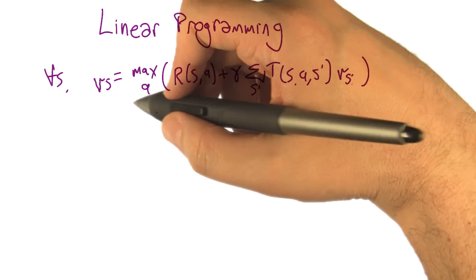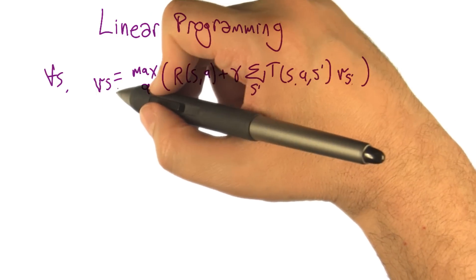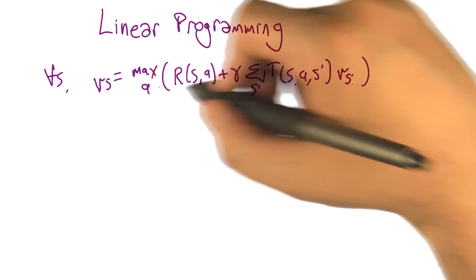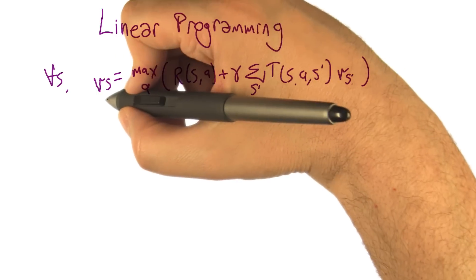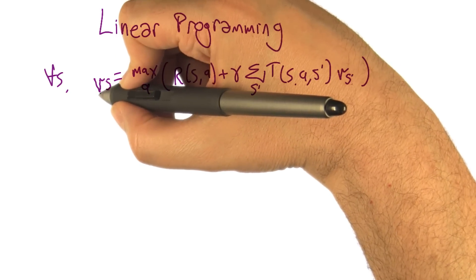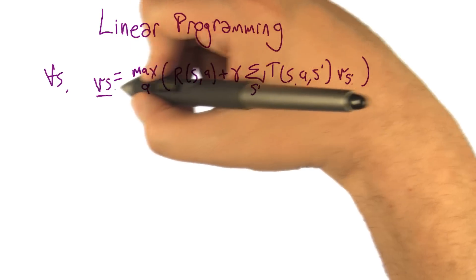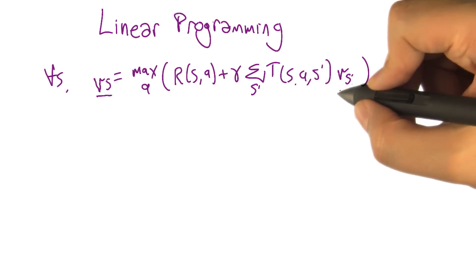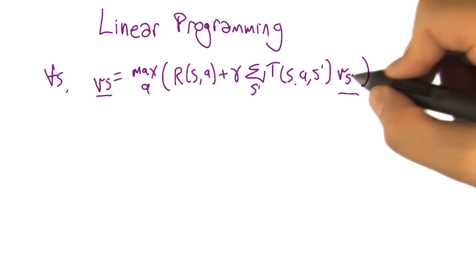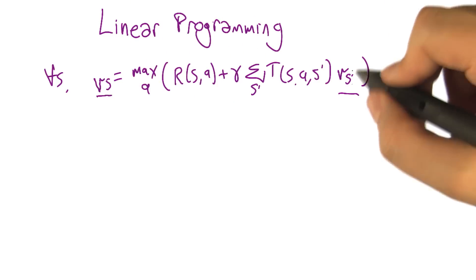So I can write the Bellman equation in terms of the value function as a set of equations, where the variables are the value function that we're interested in. For each state s, we have a variable v sub s, and we relate the v sub s's through this equation to the v sub s primes, which are themselves just v sub s's, just ordered in a different way.